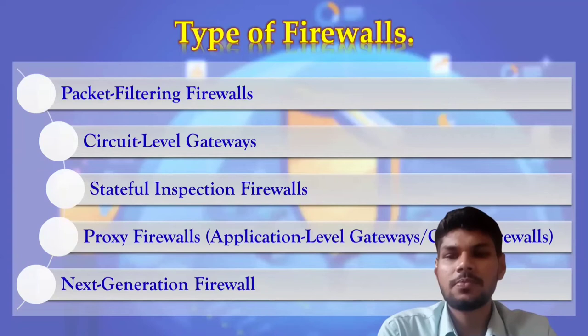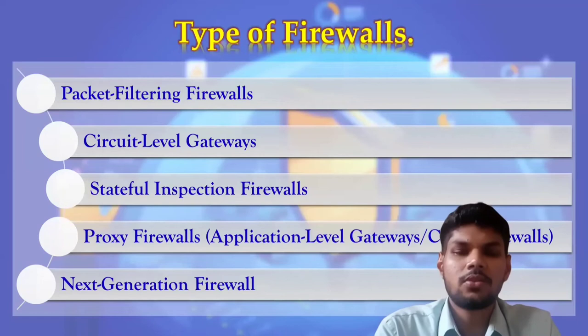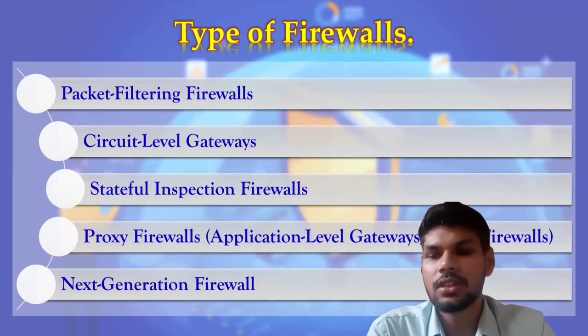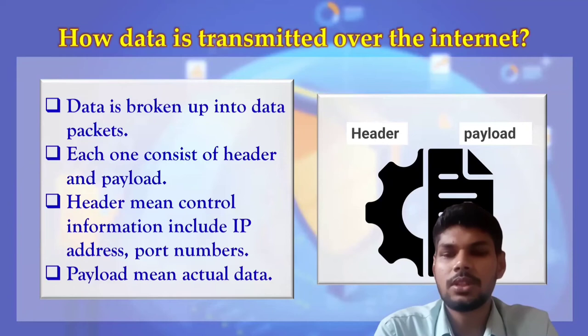Firewalls can be divided into five categories based on the mechanism used to filter traffic: packet filtering firewall, circuit-level gateways, stateful inspection firewall, proxy firewalls, and next-generation firewalls. To understand the mechanism, data on the internet is transferred in data packets. Each packet consists of a header and a payload. The header includes information like IP addresses of source and destination and port numbers, while the payload is the actual data.